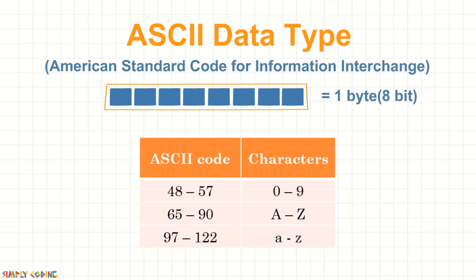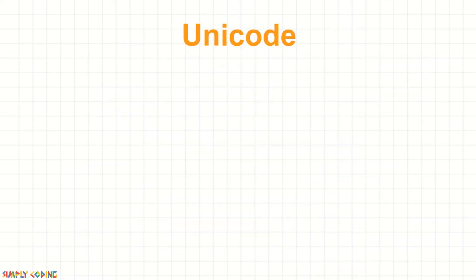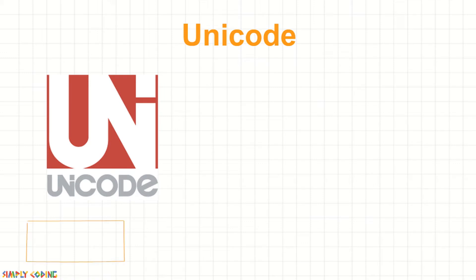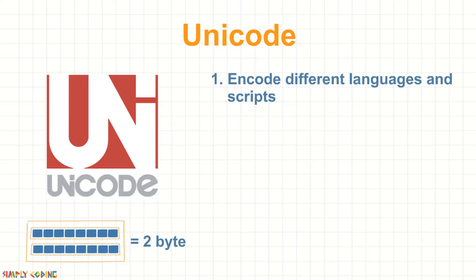However, it had its limitations as 1 byte could encode only 255 characters, so all other languages were not represented. Then Unicode was introduced as an international encoding standard which uses 2 bytes and could encode different languages and scripts